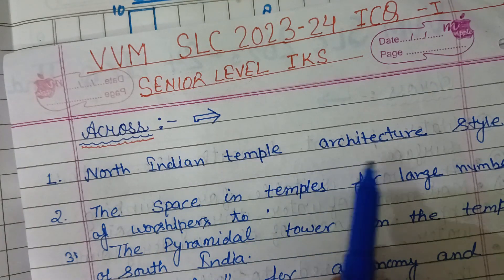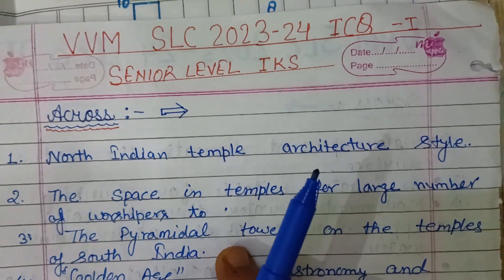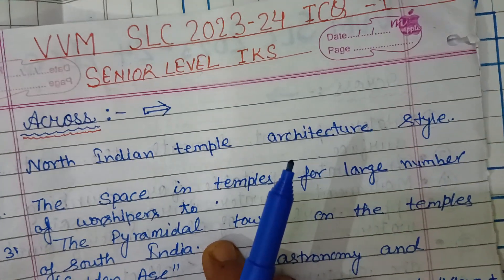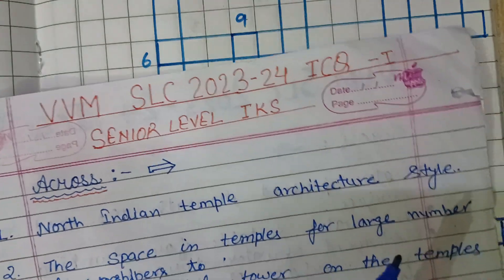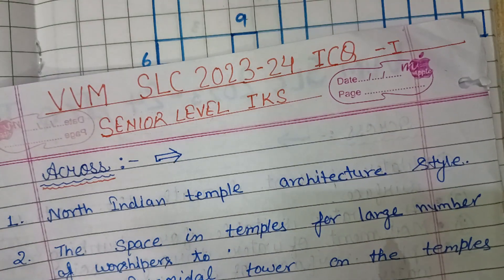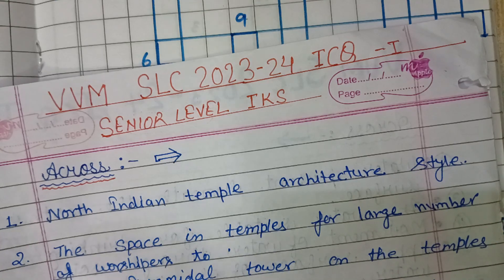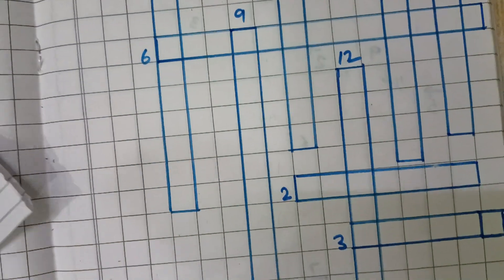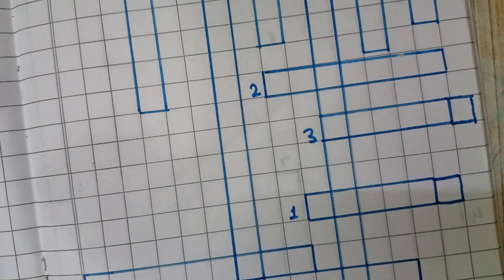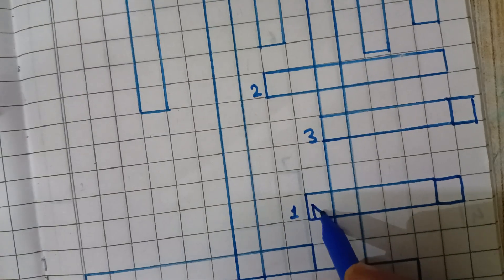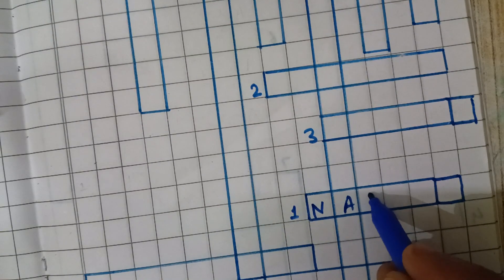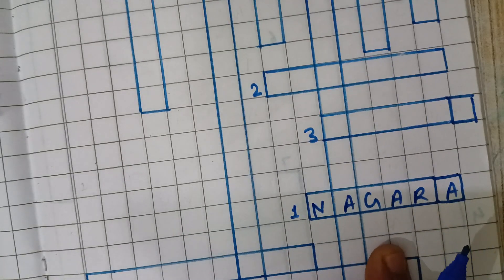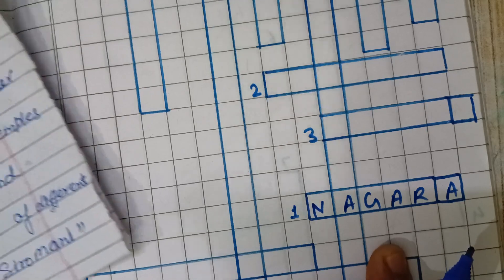First question: North Indian temple architecture style. The architecture of North Indian temples is the Nagara style. So let's fill it in number one. Nagara — N-A-G-A-R-A — is the North Indian temple architecture style.